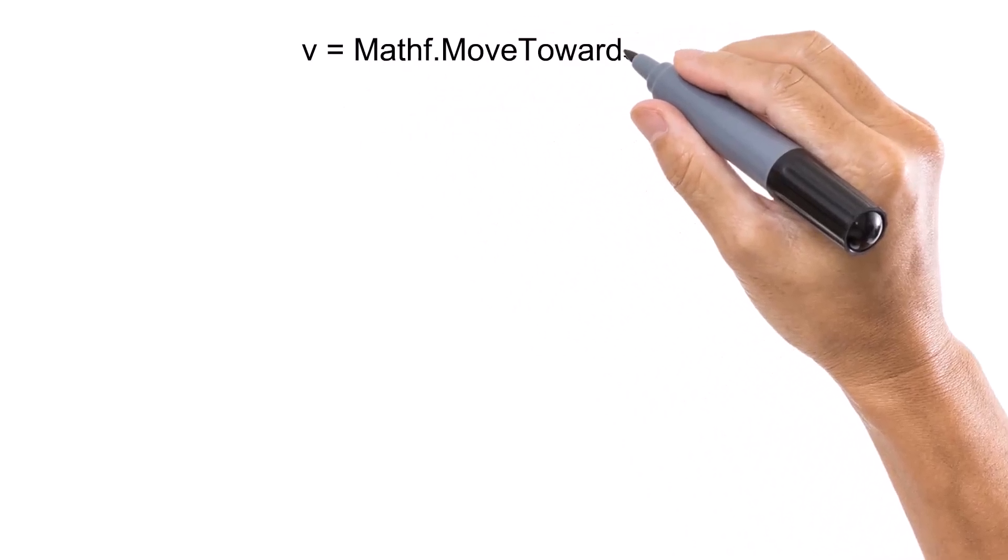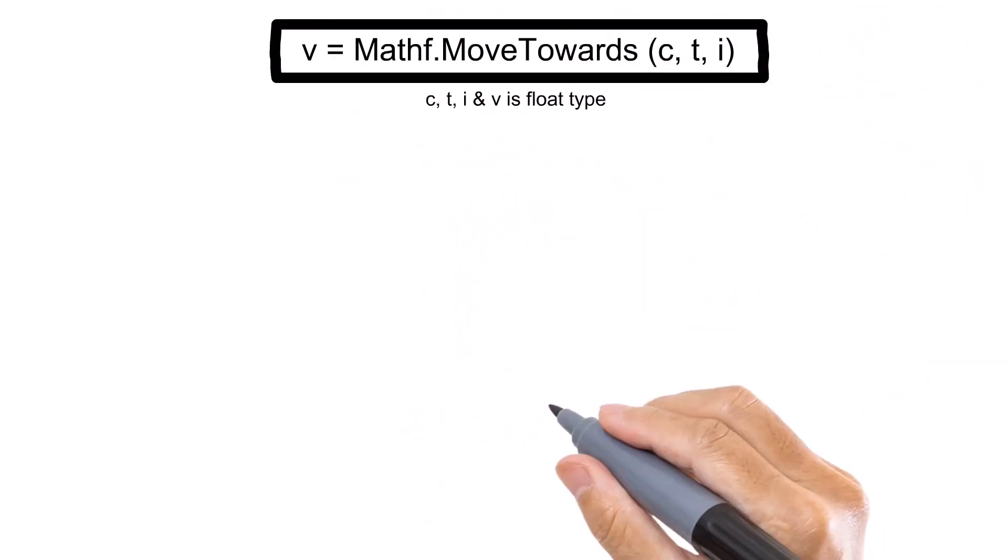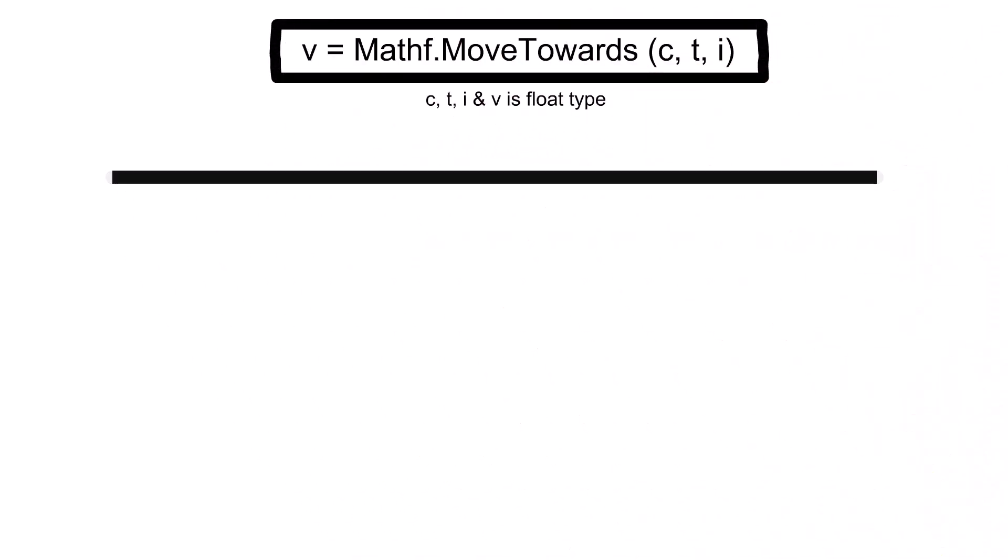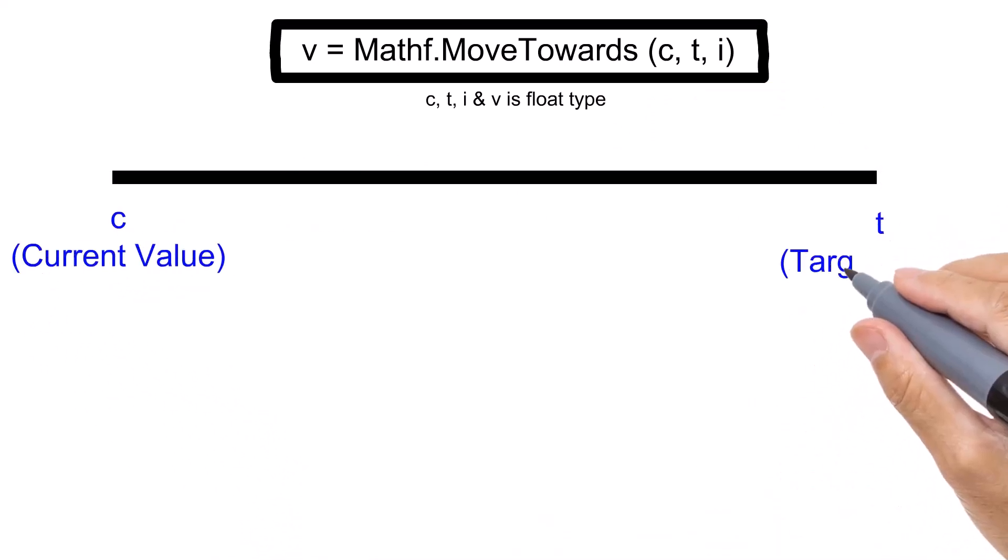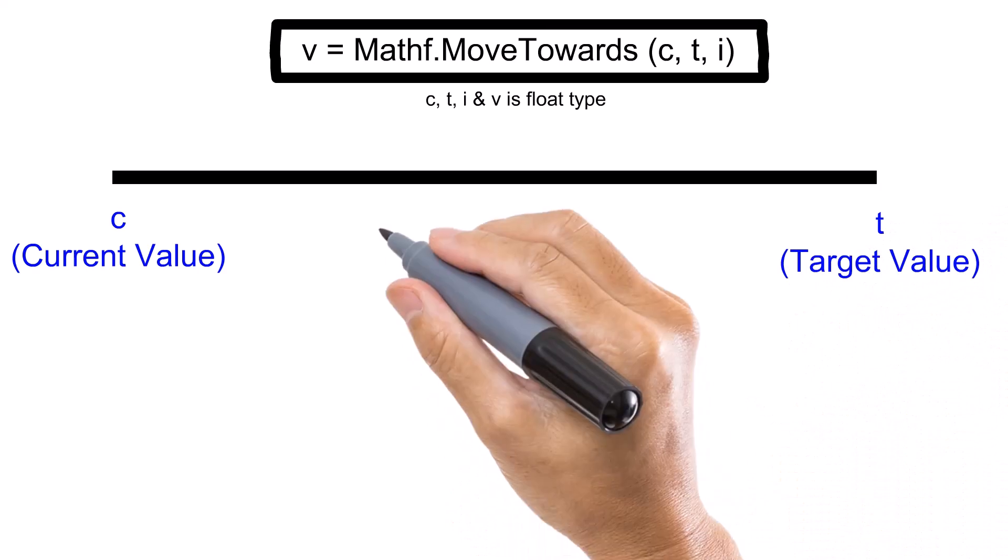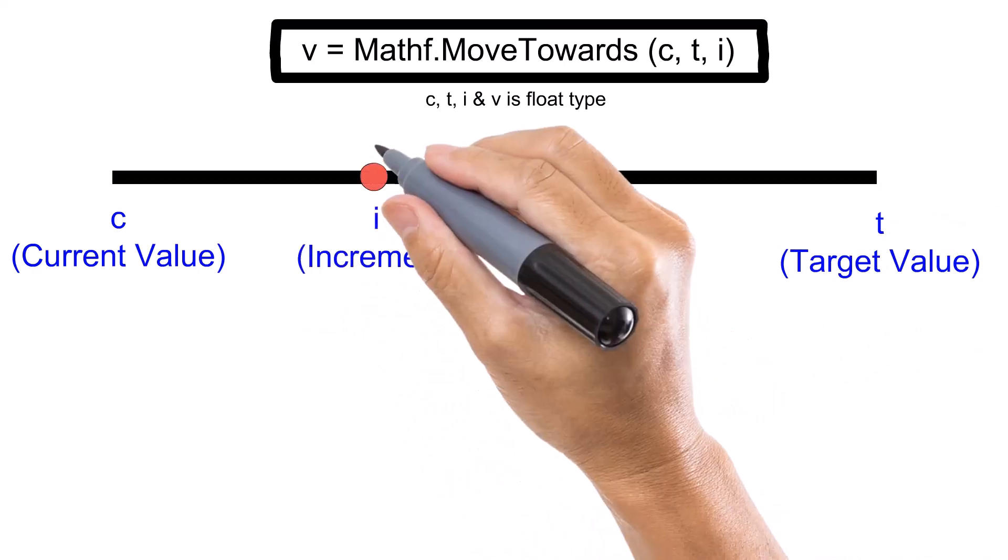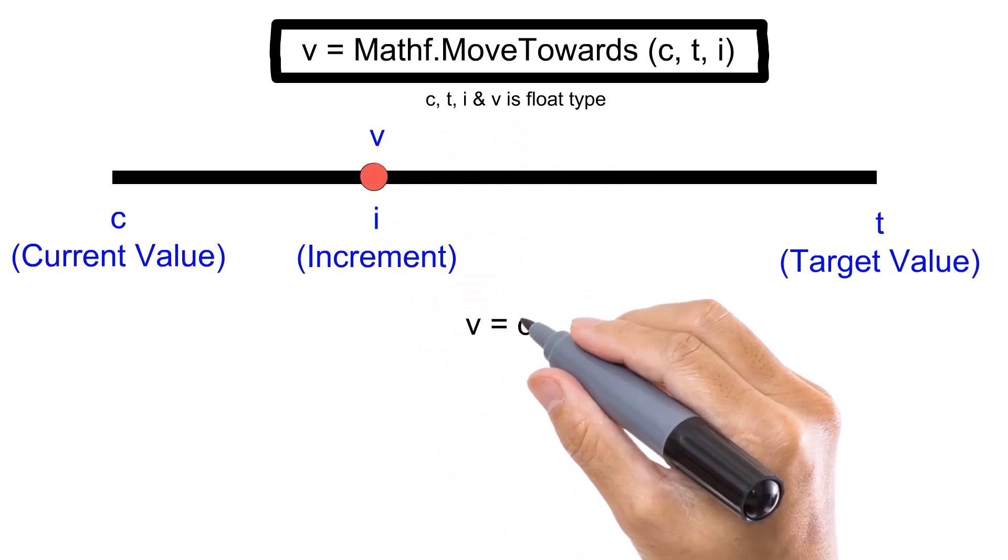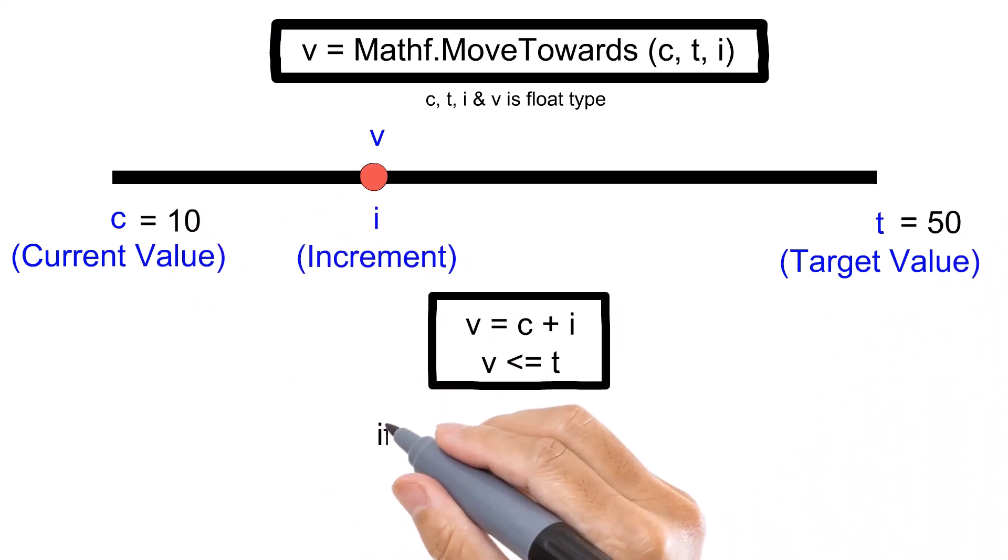The Mathf.MoveTowards function returns a new value that represents the updated current value after moving it towards the target. Here, C is the current value, T is the target value, and I is the increment that will occur in the current value. There is one condition that the returned value will never exceed the target value.